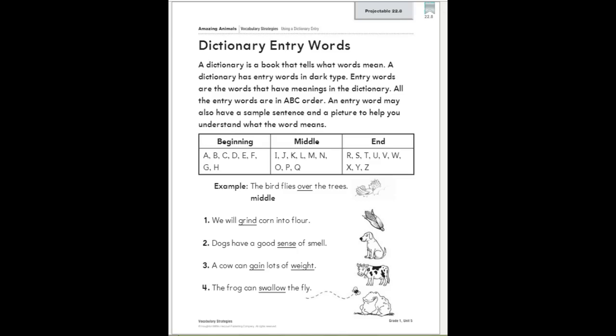A dictionary is a book that tells what words mean. A dictionary has entry words in dark type. Entry words are the words that have meanings in the dictionary. All the entry words again are in ABC order, and it may also have sample sentence and a picture to help you better understand the meaning.